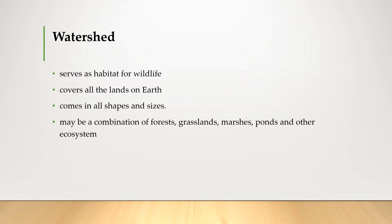Not all rain flows out in this way — some seeps into the ground as groundwater, and some becomes runoff, carrying soil, pollutants, and other materials into water bodies. Runoff can cause floods and river or stream erosion. The watershed serves as habitat for wildlife, covers all the lands on Earth, and may be a combination of forests, grasslands, marshes, ponds, and other ecosystems.